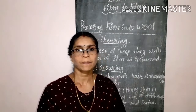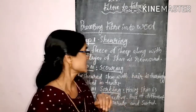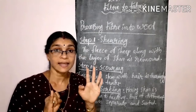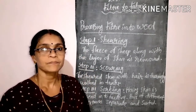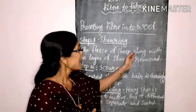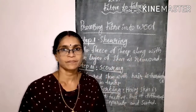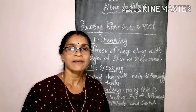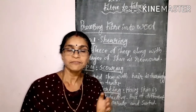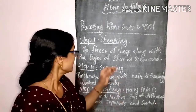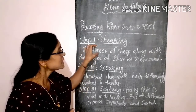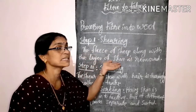To make wool from fibers, we have to follow many processes. There are six steps. The first step: the fleece of sheep along with a thin layer of skin is removed. We already understood that these wool-providing animals have a thick coat of fur. The fleece or fur of sheep, along with a thin layer of skin, is removed in this first step.